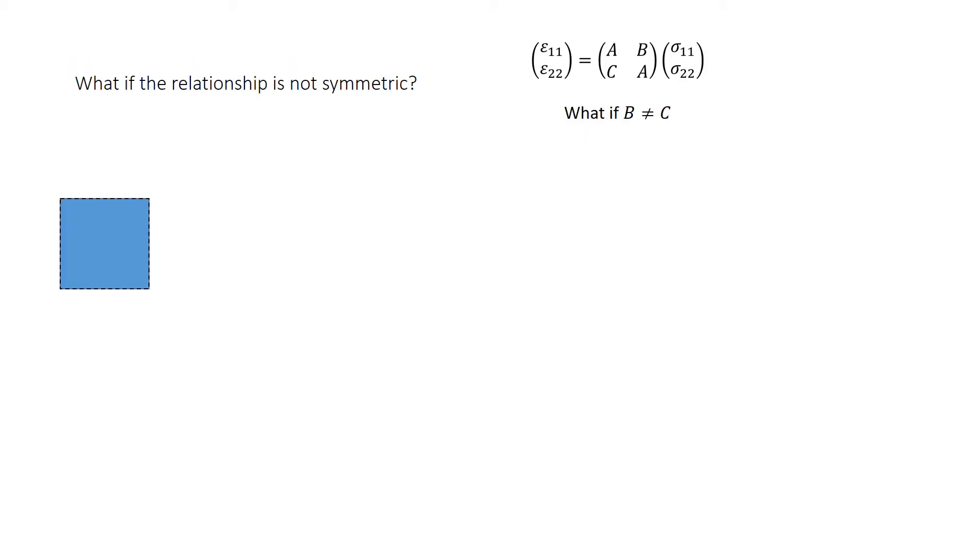For simplicity, we assume a two-dimensional material whose relationship between the stress and the strain is provided with this matrix that is not symmetric. What happens if B and C are not equal to each other?